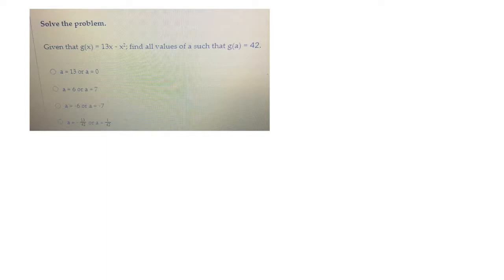All right, here's a good question, and most of it is just understanding the functional notation. So they say a function g(x) is defined by that quadratic expression, 13x minus x squared. Then they say find all values of a such that g of a is 42. So the value of the whole expression is equal to 42 when they plug an a in.